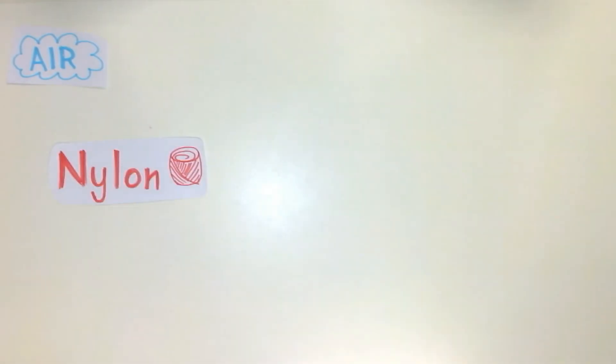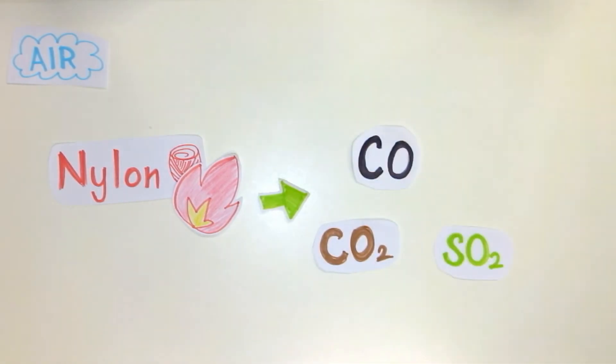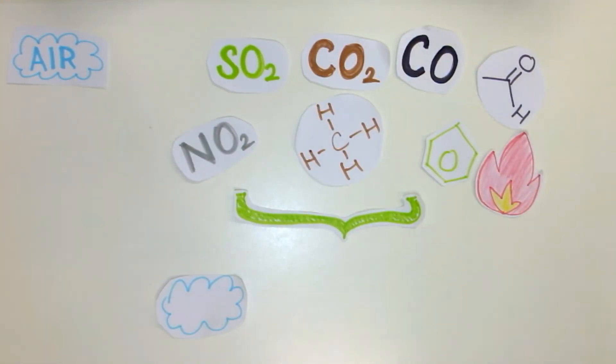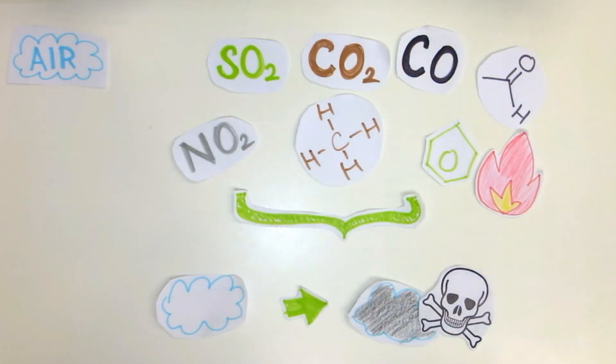Second, burning nylon releases CO2, CO, SO2, NO2. Third, burning PET produces CO, CH4, formaldehyde, and benzene. All of these gases pollute the environment and are toxic.